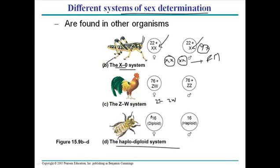In the haplodiploidy system, females have 32 diploid sets of chromosomes and males have 16 haploid sets. Males are not involved in fertilization purposes — everything is done by the female cells, which divide on their own to eventually produce males. This haplodiploidy system is normally found in bees and wasps.